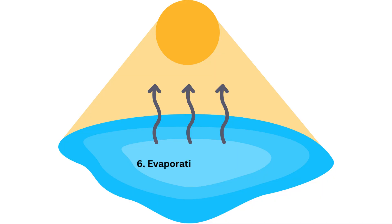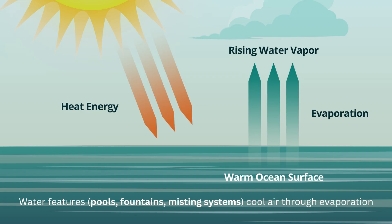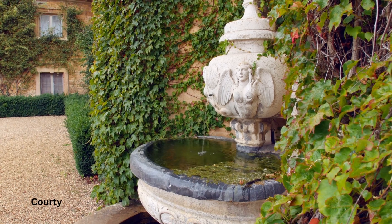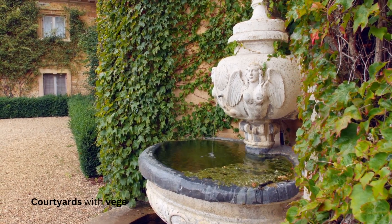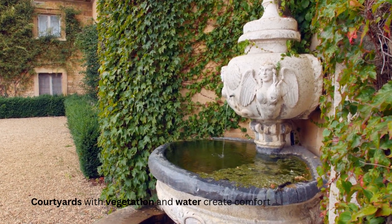6. Evaporative cooling. Water features — pools, fountains, misting systems — cool air through evaporation. Courtyards with vegetation and water create comfortable outdoor spaces.